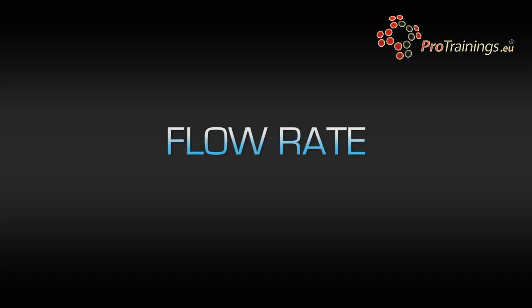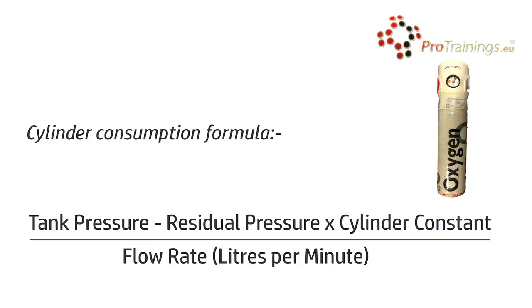In our example we are calculating the time a D size cylinder will last, so we'll use the constant figure of 0.16. The final figure we need is the flow rate in litres per minute. The usual maximum flow rate for regulators is 15 litres a minute. This may be higher in specialist applications like scuba diving, where the flow rate could be 25 litres per minute. In our example we'll use the usual maximum of 15 litres a minute.